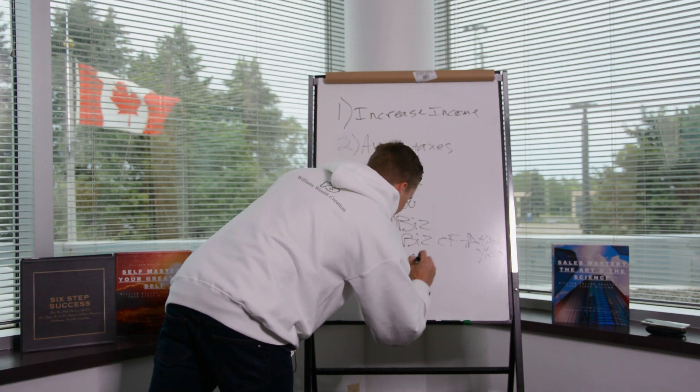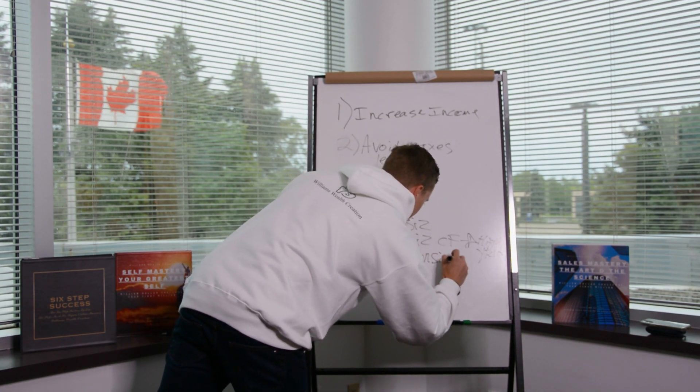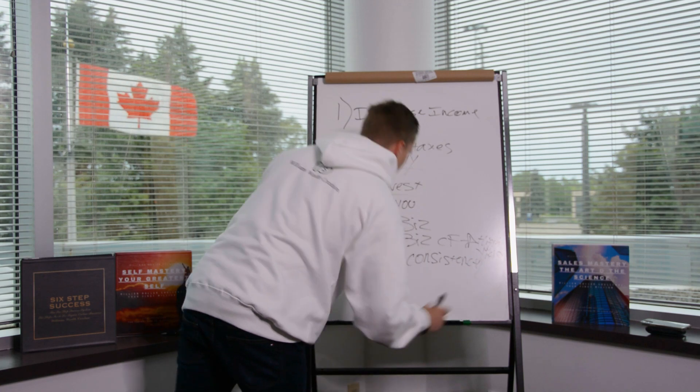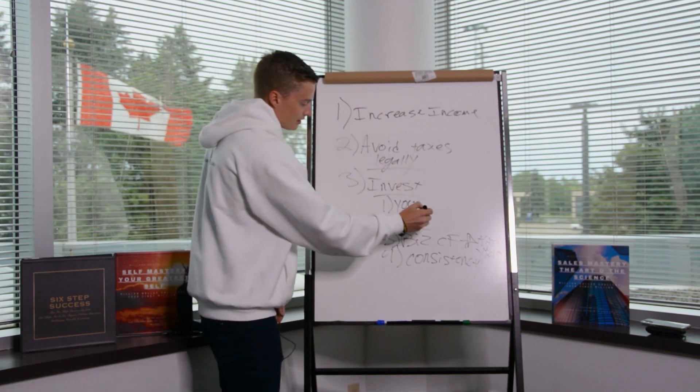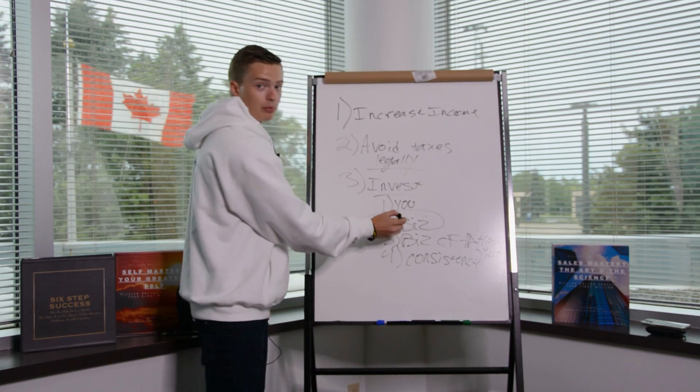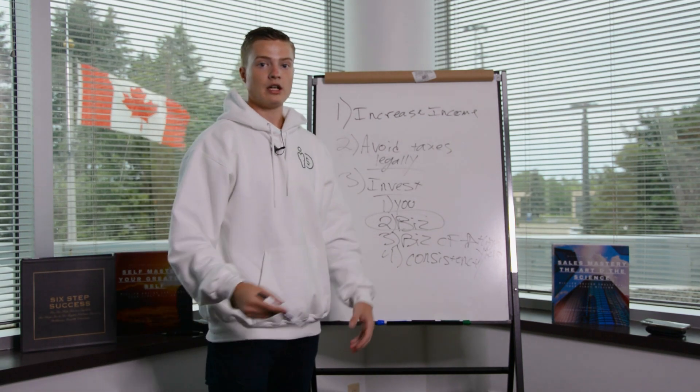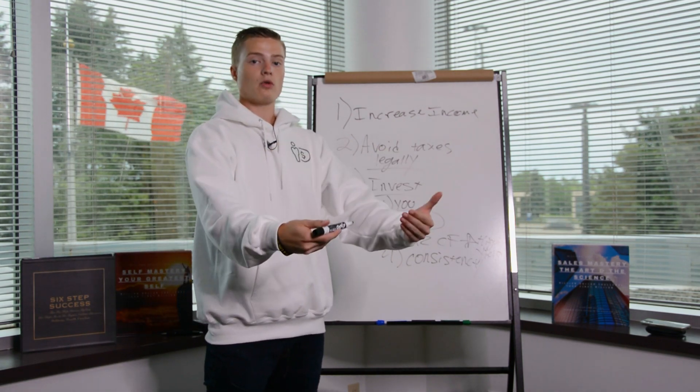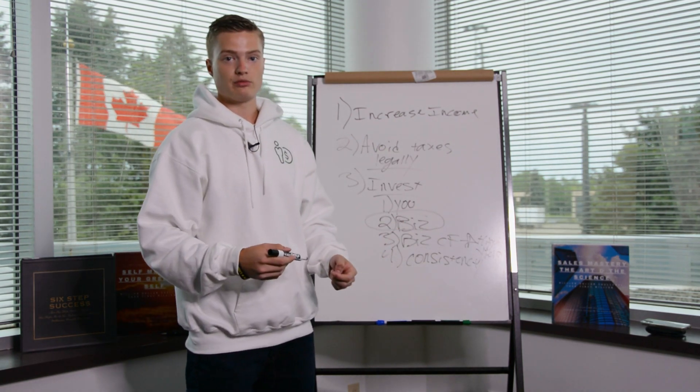And then number four is consistency. We just got to do that formula over and over and over. The hardest part is getting the business in the middle. Most people give up on this part here. Don't give up on it. And remember, learning how to earn more is the fastest way to save more.